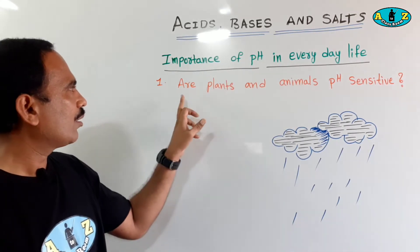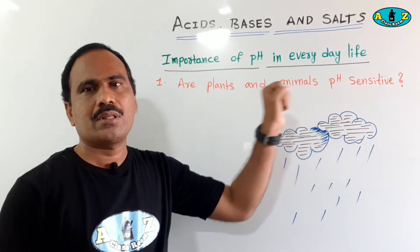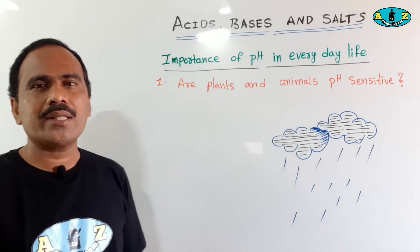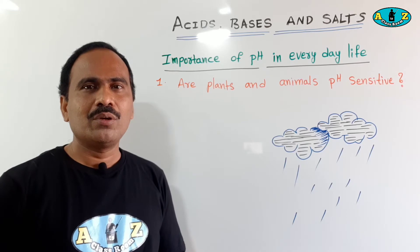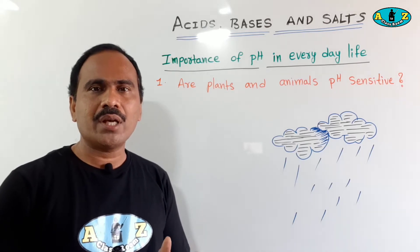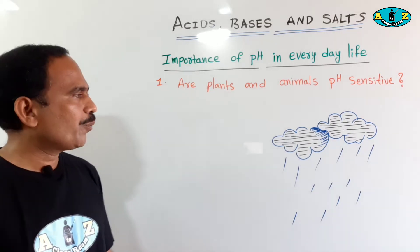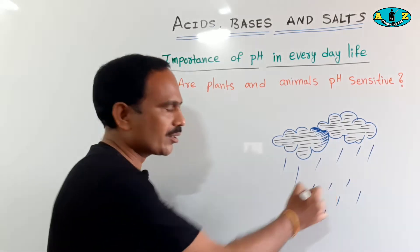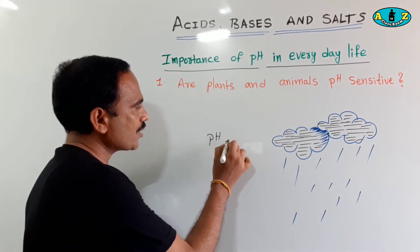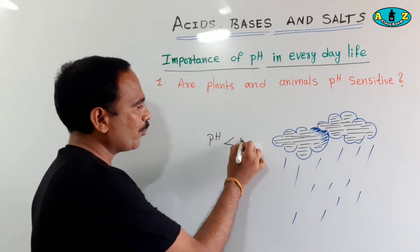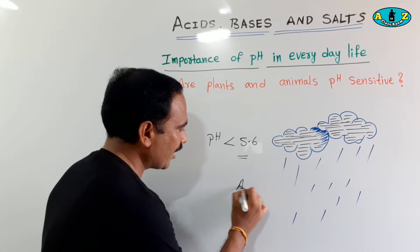First one: are plants and animals pH sensitive? Yes, plants and animals are pH sensitive. They can survive only a narrow range of changes in the pH value. For example, if the pH value of rainwater is less than 5.6, that type of rain is called acid rain.